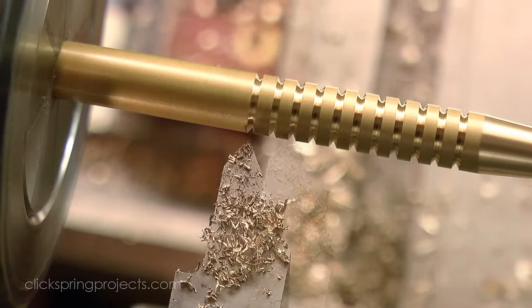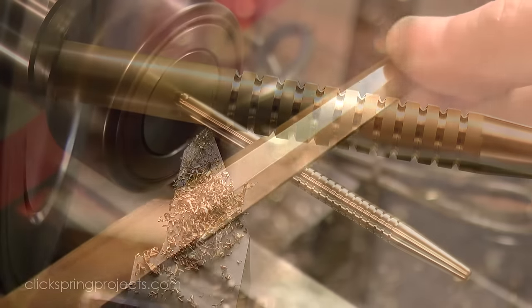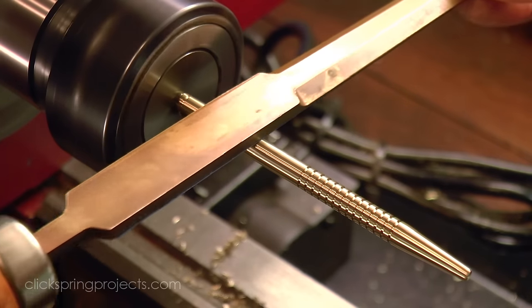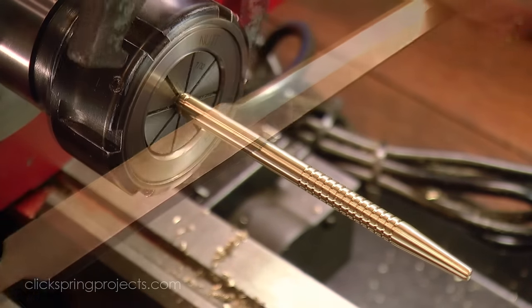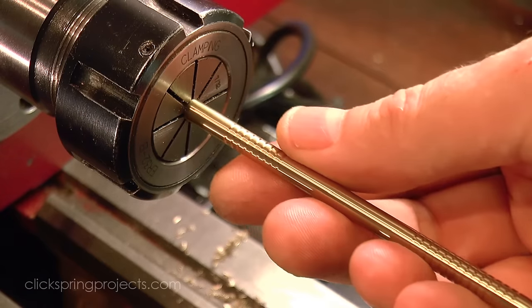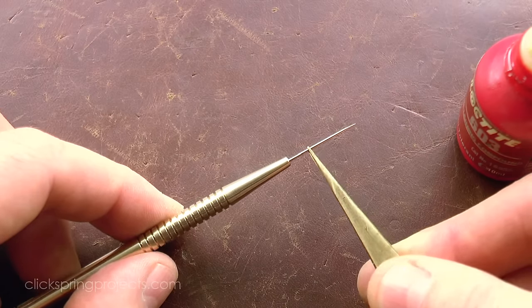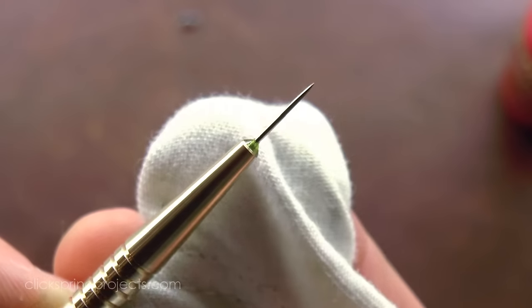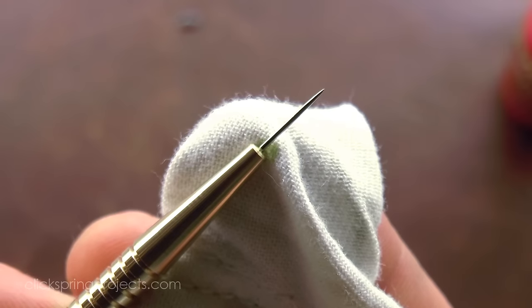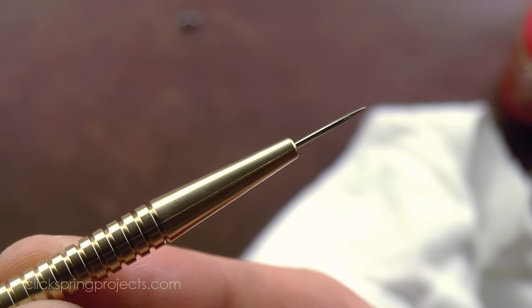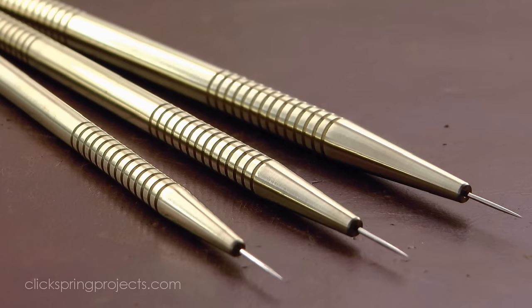Now brass rod is a nice forgiving material and it's relatively inexpensive. So I'd suggest go a little overboard with this first project. Burn through a little stock trying out some different ideas and get a good feel for the various cuts. And while you're there, why not make a few more from different diameter stock. There's always a use for an extra scriber or two in the shop, and they also make a terrific gift for other makers.